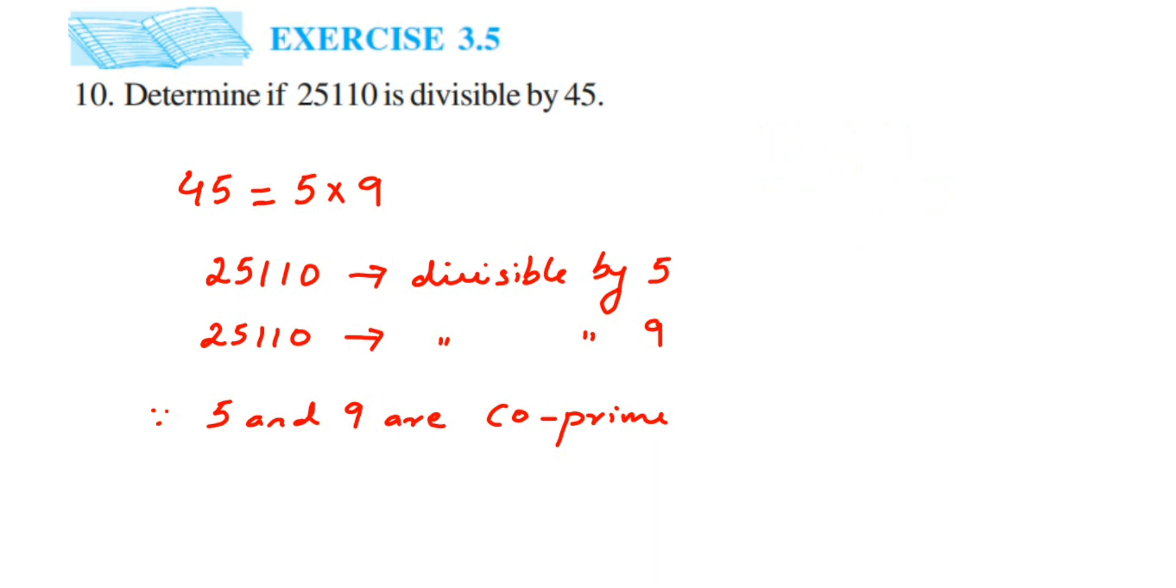So if 5 and 9 are co-prime and both can divide 25110, it means their product, that is 5 times 9 or 45, can also divide the given number. Therefore, we can say that 25110 is divisible by 45.